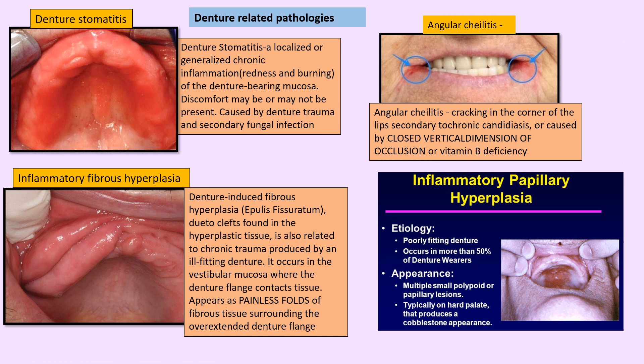Denture sore mouth (denture stomatitis) occurs when a patient wears an ill-fitting denture for several years, leading to generalized chronic or local inflammation in the denture-bearing mucosa. Epulis fissuratum is inflammatory fibrous hyperplasia. Angular cheilitis is cracking at the angle of the mouth due to vitamin deficiency or closed vertical dimension and can become infected by Candida. Inflammatory papillary hyperplasia affects the palate or ridge from ill-fitting dentures.